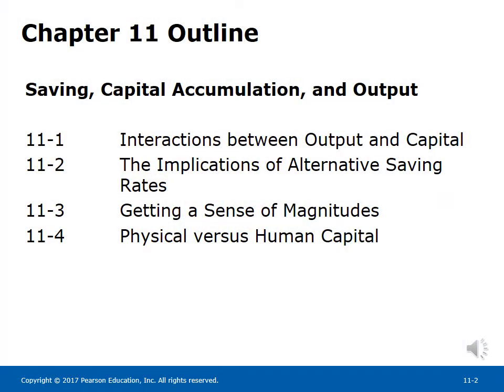Chapter 11 Outline: Saving, Capital Accumulation, and Output. 11-1 Interactions between Output and Capital. 11-2 The Implications of Alternative Saving Rates. 11-3 Getting a Sense of Magnitudes. 11-4 Physical vs. Human Capital.